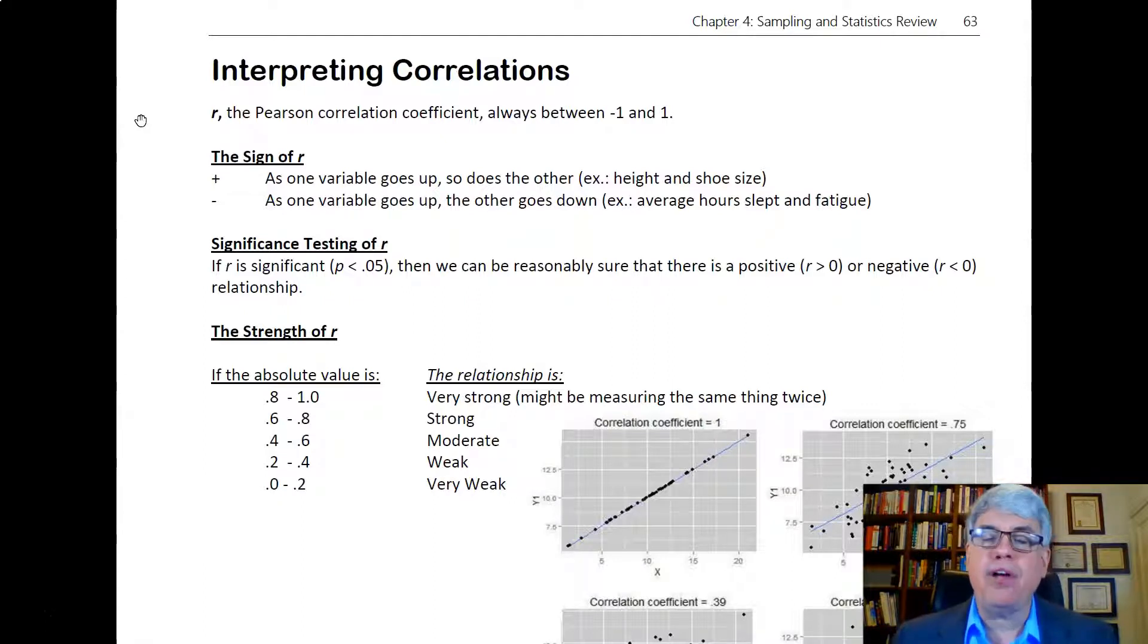It's always between minus one and plus one. So if you have an r that's like 1.5, something's gone wrong. That doesn't make any sense. It's always going to be between minus one and plus one.